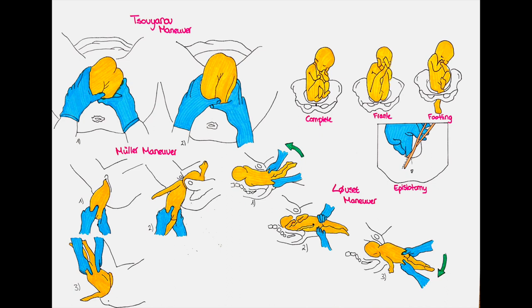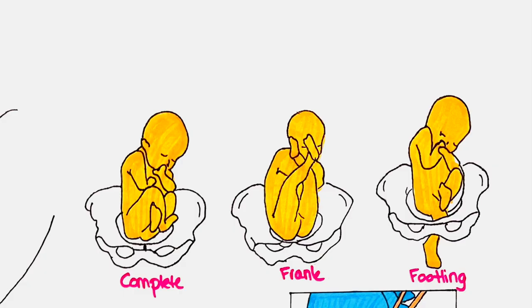Breech presentation means that the baby's feet are entering the birth canal first, as opposed to the normal cephalic presentation where the baby comes head first. There are different variations: the complete breech, where the fetal arms are crossed in front of the chest and the legs are flexed at the hips and knees; the frank breech, where the hips are flexed but knees are extended so the feet are in front of the baby's face; and the footling breech, where one or both legs are extended at the hips and knees so it looks like the baby is standing inside the uterus. This last presentation is the most unfavorable for vaginal delivery.